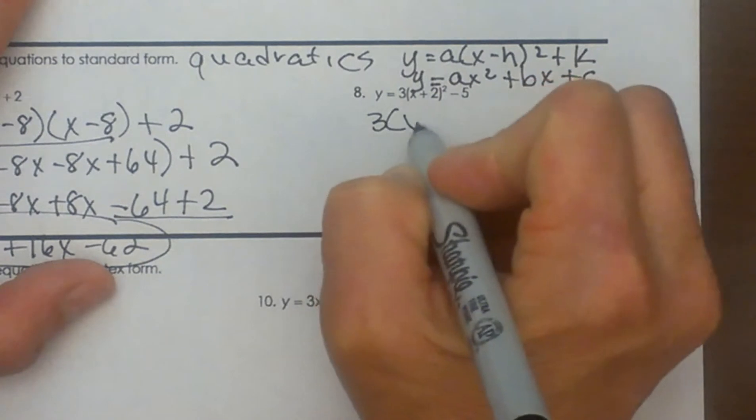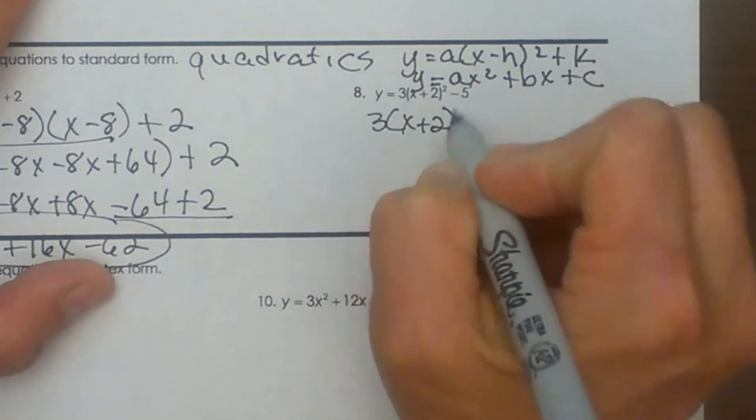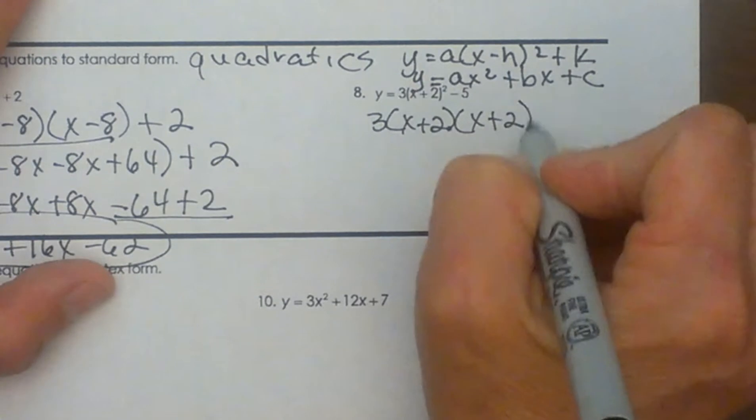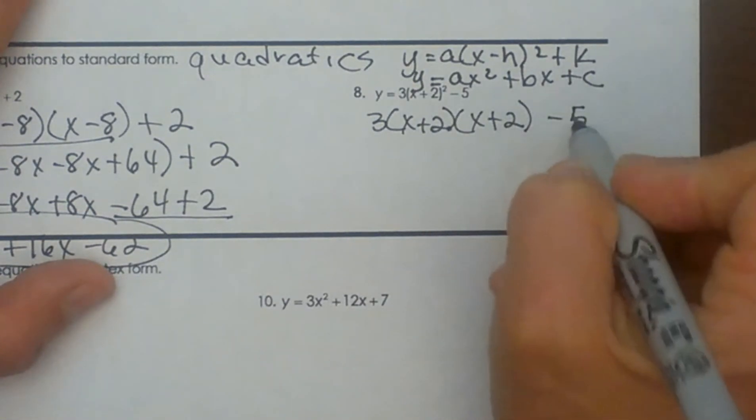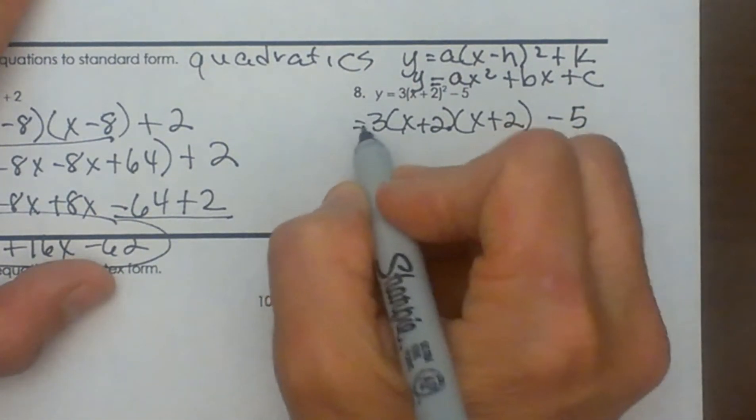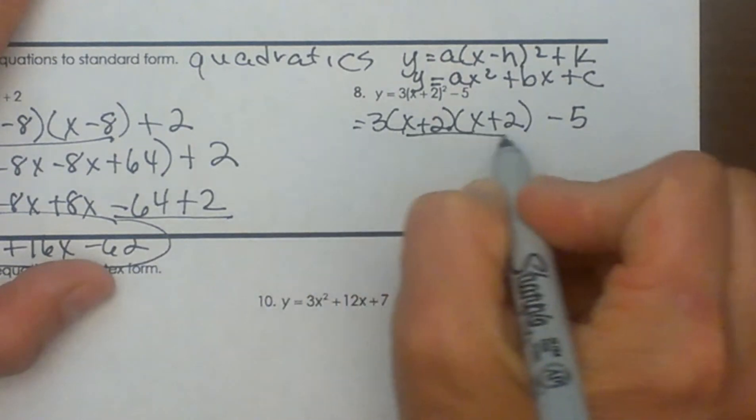I have 3(x + 2)² - 5, so let's write out two of those. I always call those twins because you have two of them. I'm not going to distribute my 3 first. I'm going to FOIL first.